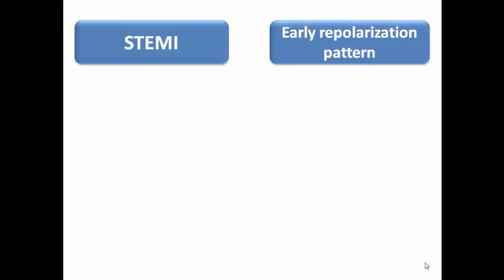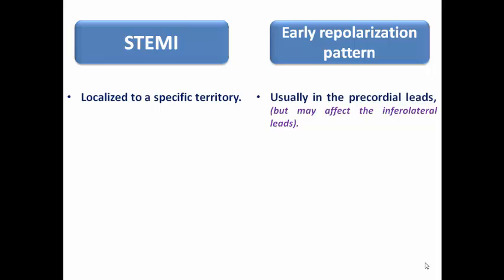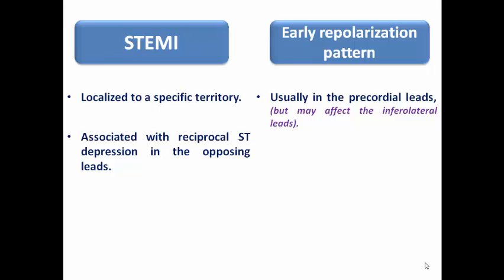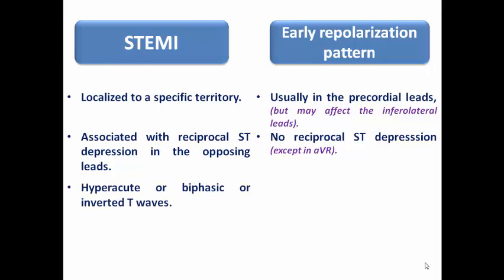Now let's compare STEMI and early repolarization pattern. In STEMI, ST elevation is localized to a specific territory, whereas in early repolarization it is predominantly precordial but may affect inferior and lateral leads — not restricted to a single territory. In STEMI, ST elevation is associated with reciprocal ST depression in opposing leads, whereas early repolarization has no reciprocal ST depression except in AVR. In STEMI, we can see hyperacute, biphasic, or inverted T-waves depending on presentation time, whereas early repolarization has concordant asymmetrical T-waves with normal amplitudes.